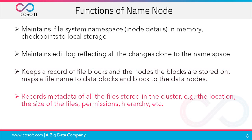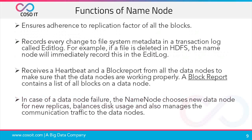The name node records metadata such as file location, size, permissions, hierarchy, etc. It also ensures adherence to the replication factor of all the blocks, and records every change to file system metadata in a transaction log called the edit log. For example, if a file is deleted in HDFS, the name node will immediately record this in the edit log.